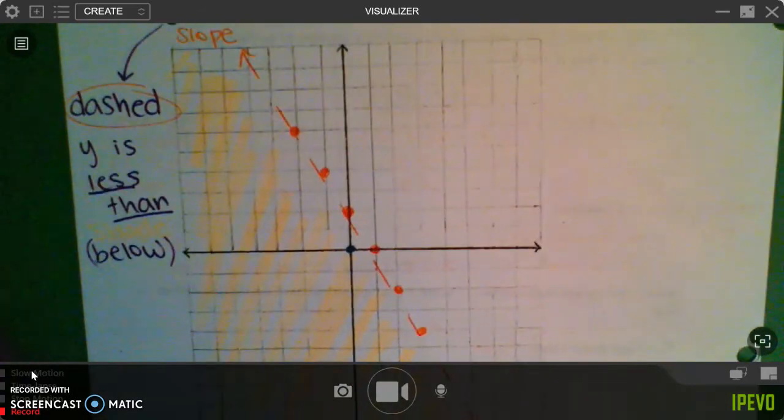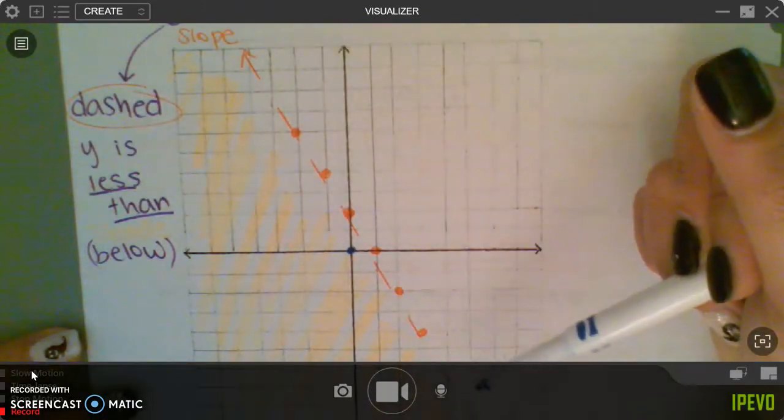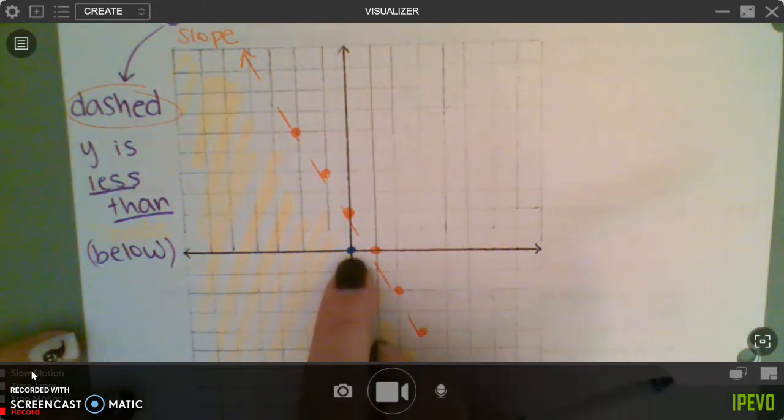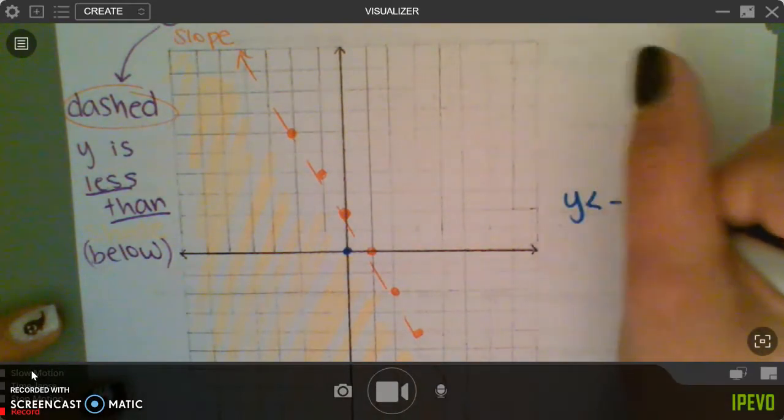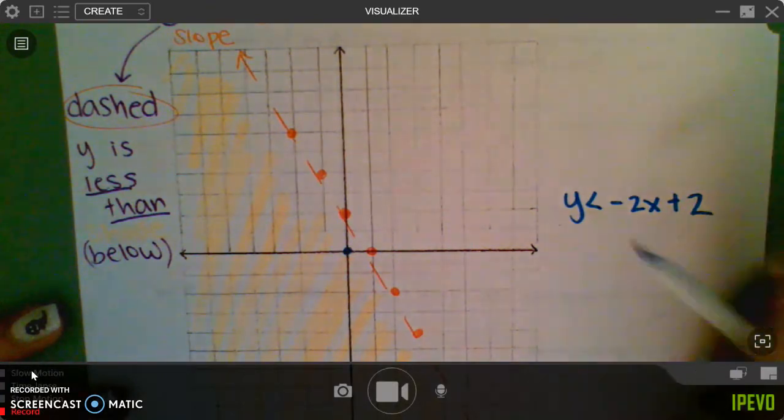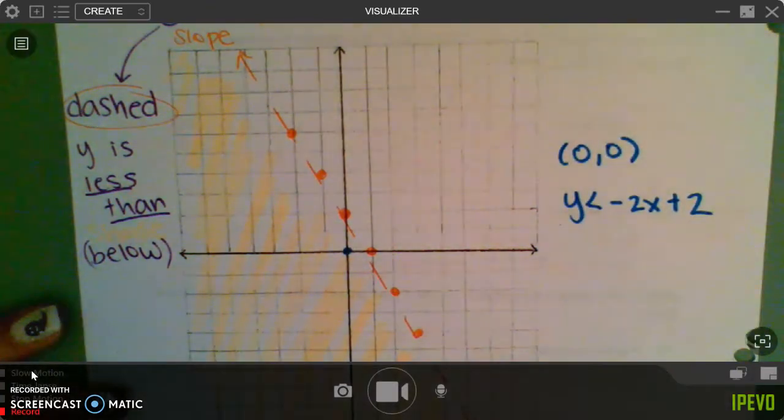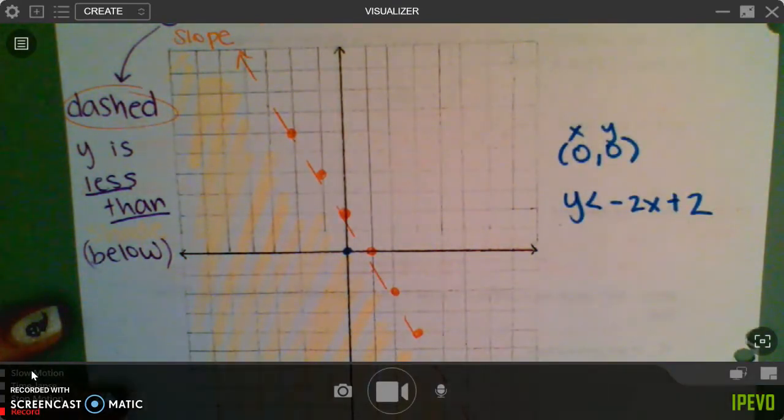So zero, zero, in this case, is not on the line, which is good. When we're choosing a point, we do not want it to be on this line we've drawn. So zero, zero, I'm going to plug in. So I'm using my original equation, and the point I'm using is zero, zero, which means the x is zero, and the y is zero.